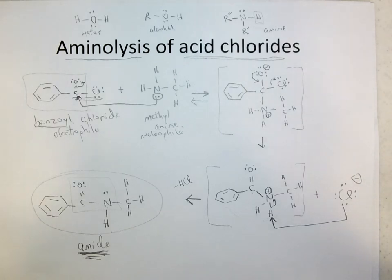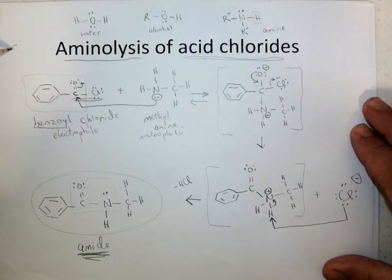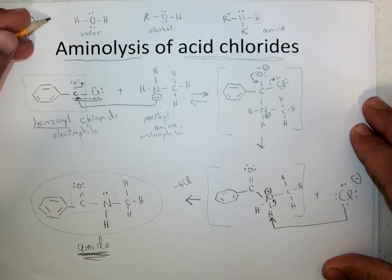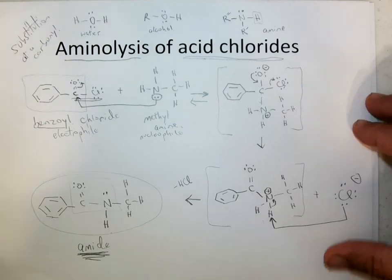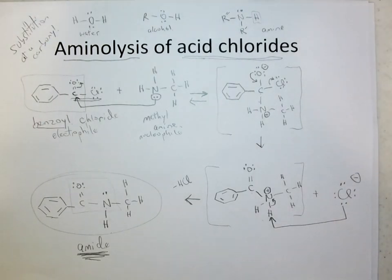Again, this is a type of substitution where we're replacing the chloride with an amine group to turn an acid chloride into an amide. So this is a type of substitution reaction. Substitution at a carbonyl, very good general type of reaction to understand.